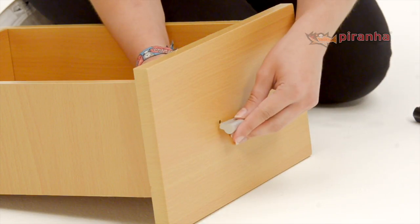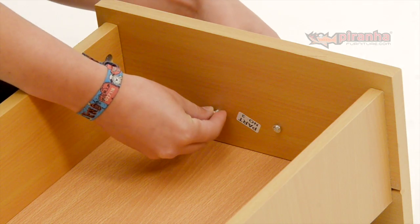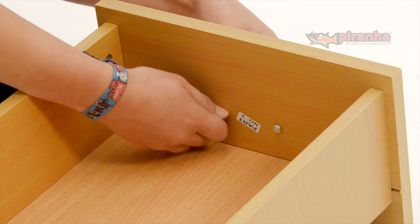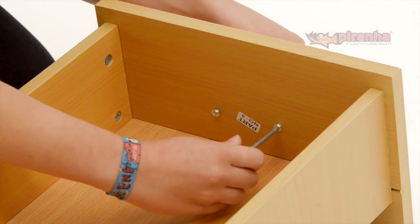Step 4. Now we need to fit the handle to the front of the drawer. Be gentle when pushing the threaded bolts through the drawer front to avoid damaging the laminate. Screw the bolts in firmly to secure the handle.